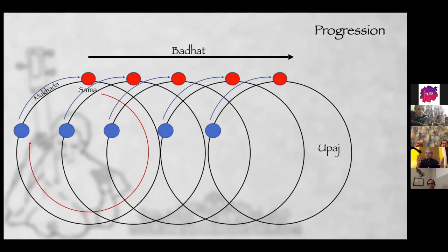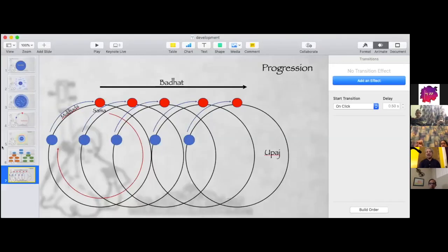So now this probably sums up Upaj and build up during the Avaratan, release of the Mukhda, come to the Sama, release that excitement and go to the next Avaratan. And so this is exactly what happens. This is the crux of development. So this is what development is about.